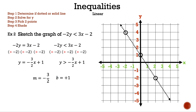Now let's connect the dots. Why do we have a dotted line and open circles for the three points we plotted? Since greater than does not have 'or equal to,' the points on the line are not included. So the line and the three points we plotted must be dotted or open.